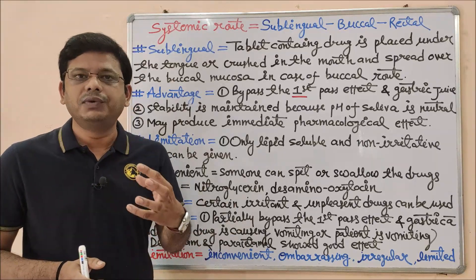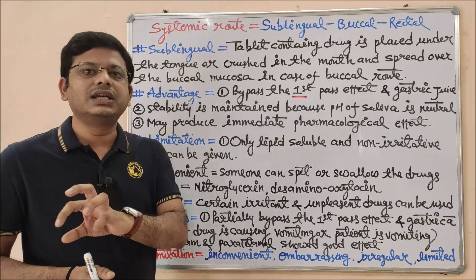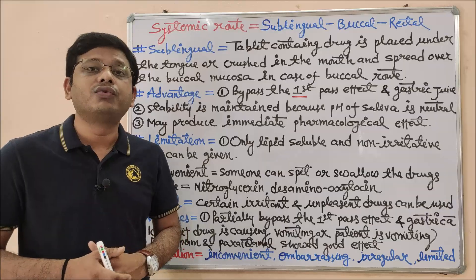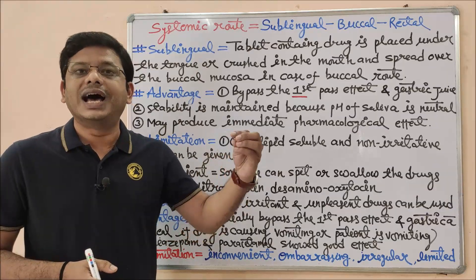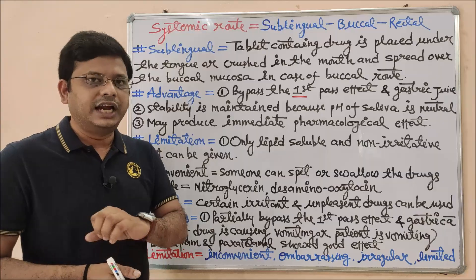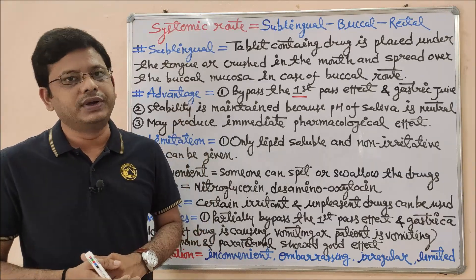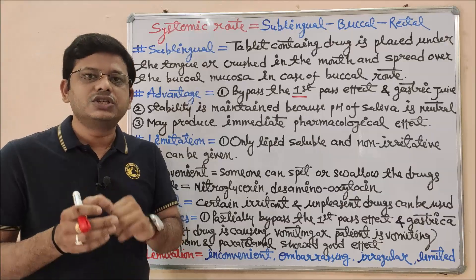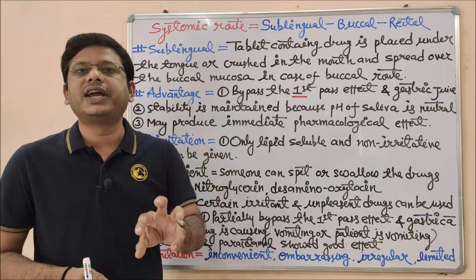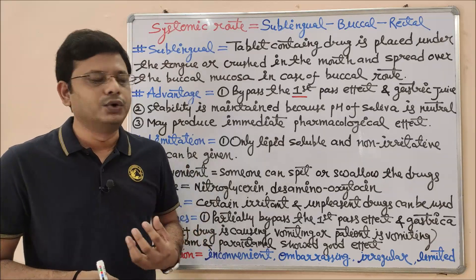There are so many consequences of this, which we will see under the metabolism topic. Due to this inactivation, the drug will not produce 100% of its intended effect — this is called first pass metabolism. In case of first pass metabolism, the efficacy of the drug will be reduced as per the expected level. So in the oral route, this is a limitation.